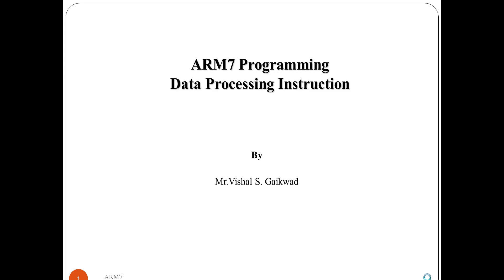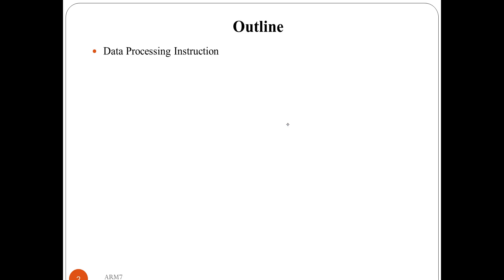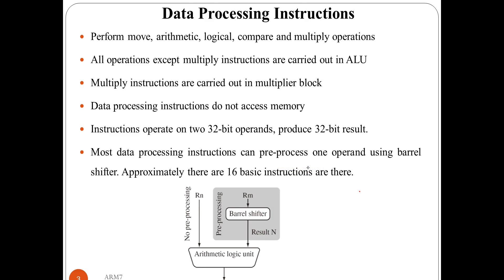Hello everyone. In this tutorial we are going to learn the concepts related to data processing instructions available in the ARM7. In ARM we have different categories of instruction sets, like data processing instructions and conditional instructions. In data processing we have basically these categories: data movement, arithmetic operations, logical operations, compare operations, and multiply operations.